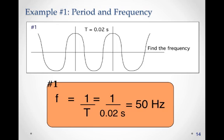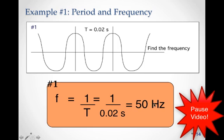So let's take a look at an example of how we could calculate frequency if we were given the period. If we're given the period here of 0.02 seconds, the time it takes to repeat the wave from here to here, the frequency would be one over the period, or one divided by 0.02 seconds. So one divided by 0.02 is 50 Hertz.